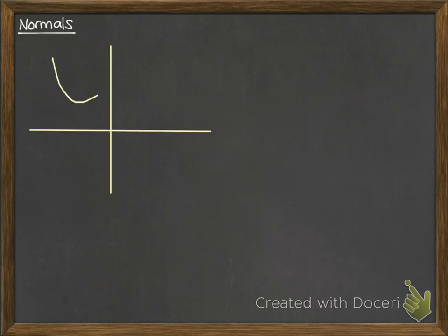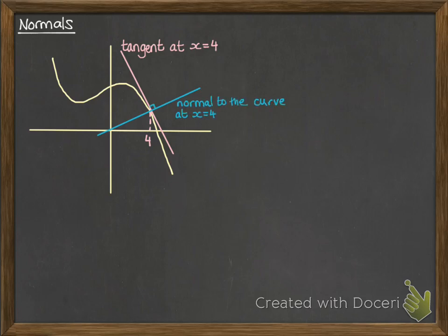Okay, normals. If we've got this picture again, the normal goes 90 degrees to the tangent. So at that same point, you could work out the tangent, the gradient of the tangent, and you can find the gradient of the normal because they're at 90 degrees.